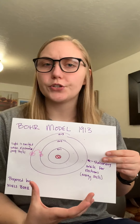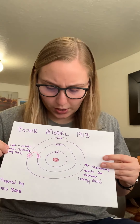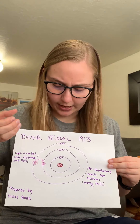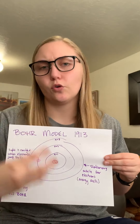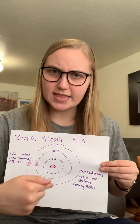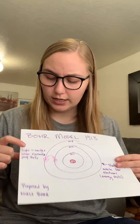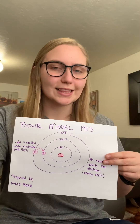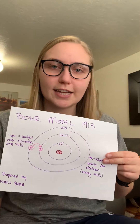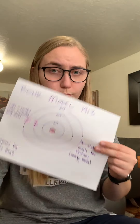Bohr said there's got to be an order to this chaos. He still kept the positively charged nucleus in the center, but he called the areas around it stationary orbits. He said the electrons have to stay in these stationary orbits and there must be laws governing when they can pass from orbit to orbit. One way he found this was that whenever electrons moved between orbits, they only emitted light — not radioactive energy — just flashes of light each time. So he said there's got to be an order to it.